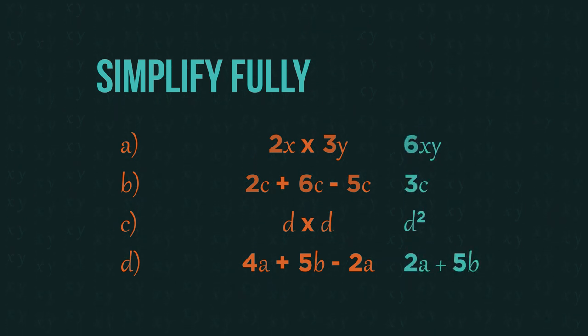How did you get on? For the first one, we just do 2 multiplied by 3 is 6, and remove the multiplication sign, so we get 6xy.